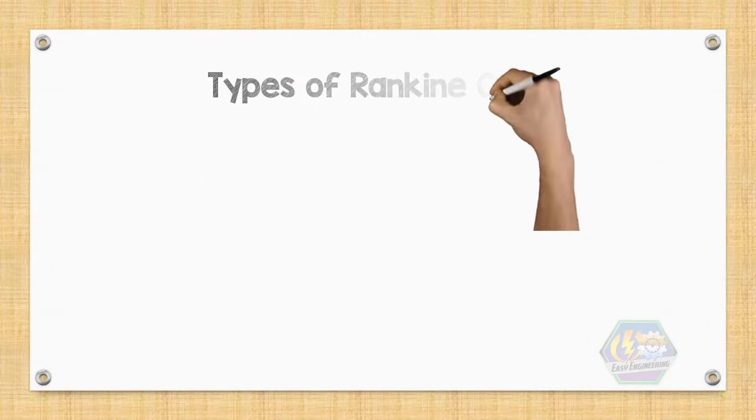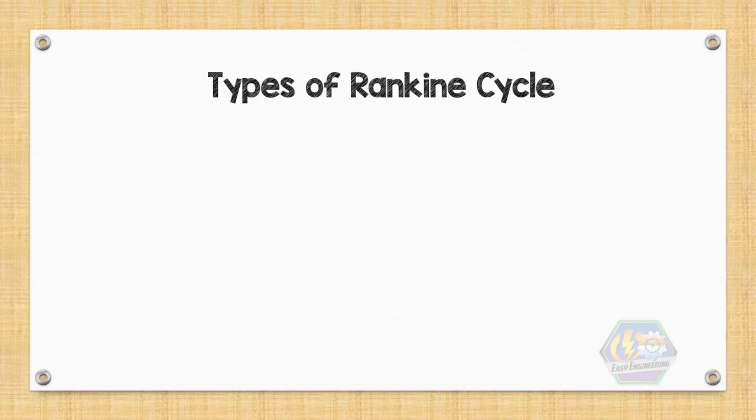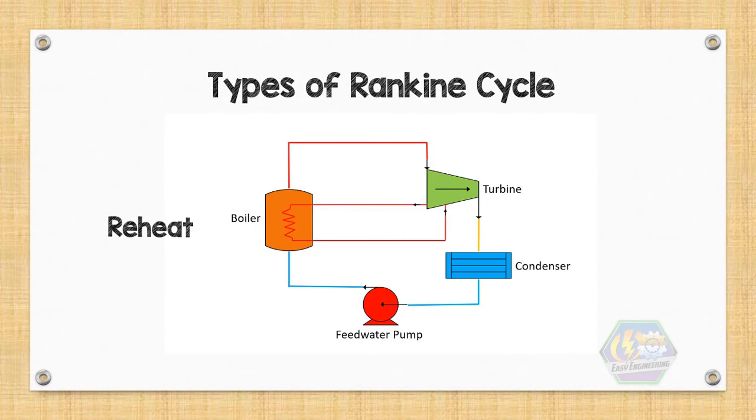So now, let's talk about the variance or the types of Rankine cycle. We have a reheat Rankine cycle. It is a cycle which we introduce the exhausted steam back into the boiler to reheat it.